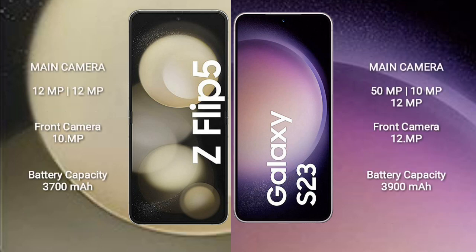The Samsung Galaxy Z Flip 5 has a rear dual camera setup of 12MP plus 12MP, and a front camera of 10MP. The Samsung Galaxy S23 has a rear triple camera setup of 15MP plus 10MP plus 12MP, and a front camera of 12MP.